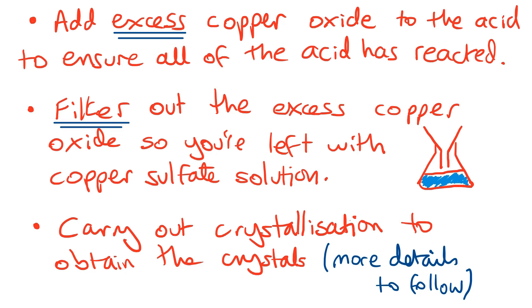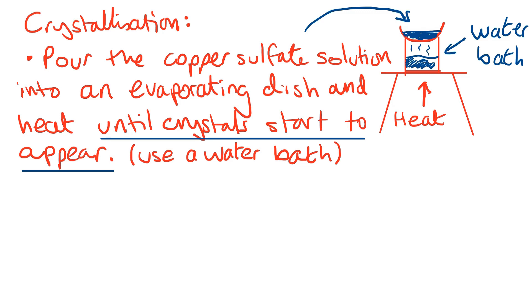The next stage is to carry out crystallization to obtain the crystals. The first stage of crystallization is to pour the copper sulfate solution into an evaporating dish and heat it until the crystals start to appear. To do that we'd use a water bath, which is basically a beaker of water with the evaporating dish on top. Then we would allow it to cool, and as it cools the copper sulfate becomes less soluble, so more of it forms crystals in the bottom of the dish.